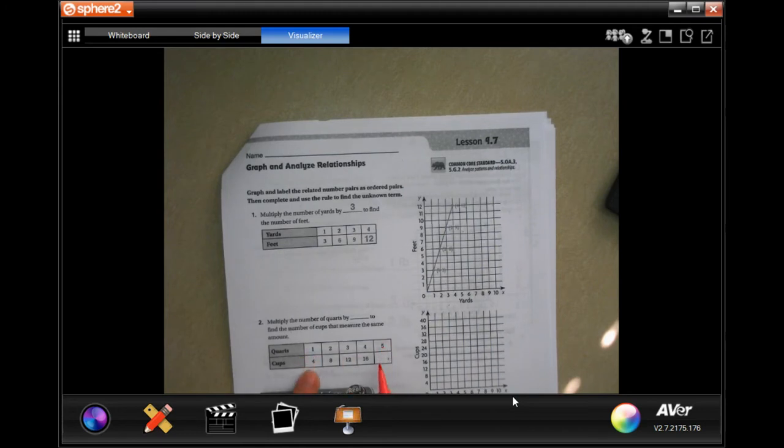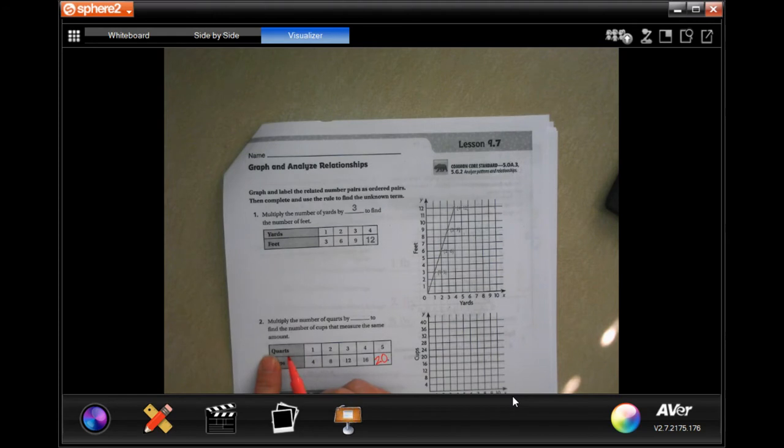So you're going to multiply the top number by four to get the bottom number. One times four is four, two times four is eight, three times four is twelve, four times four is sixteen, and five times four is twenty. Multiply the number of quarts by four to find the number of cups.